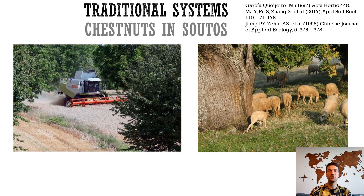Study of traditional multicropping systems is a good approach to design polycultures with predictable performance. For example, chestnuts have been traditionally intercropped with winter cereals, such as oat and rye, in sotos — traditional orchards in southeastern Galicia in Spain. Such high-yielding, low-input intercropping systems increased fertility of upper soil horizons.